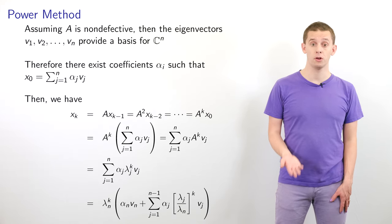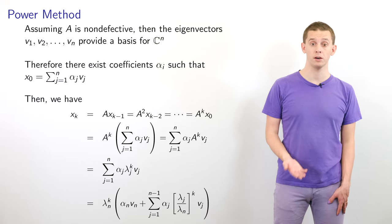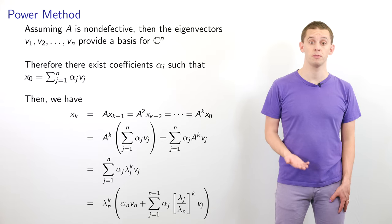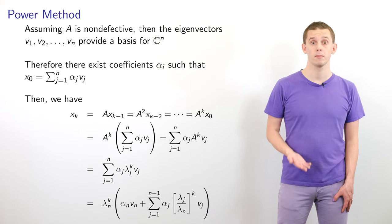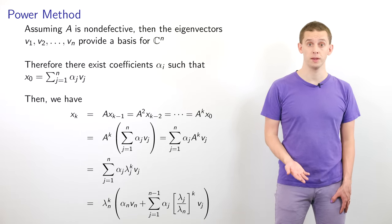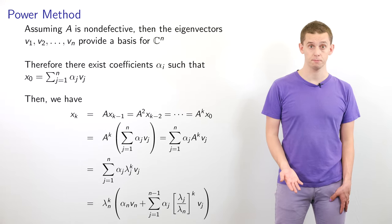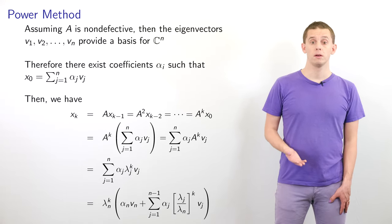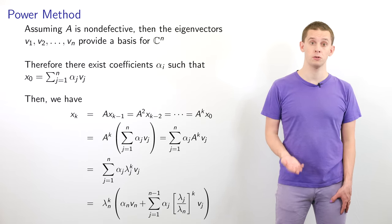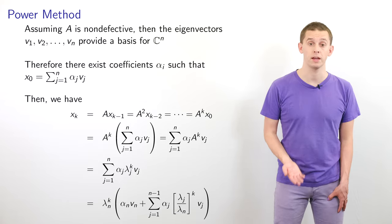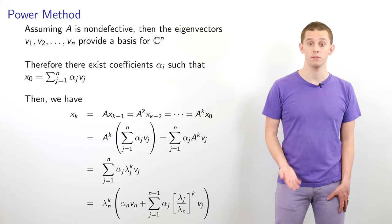Let's assume that A is non-defective. In this case, we'll have a full set of eigenvectors v1 to vn that provide a basis for the complex n-dimensional space. We'll also assume that lambda_n is the eigenvalue with largest modulus. Because we have this basis, we know there will exist coefficients alpha_i such that x0 can be written as the sum from j=1 to n of alpha_j v_j.